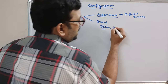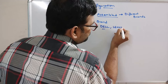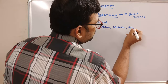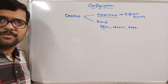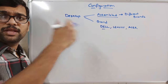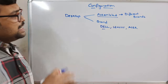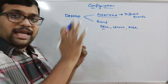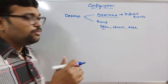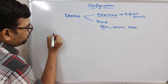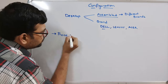Brands like Dell, Lenovo, and others are well known. Whether you go with a brand or an assembled computer, in both cases we need to configure the system — that means we need to take care of a few things. The first one is the processor: what type of processor do we require?